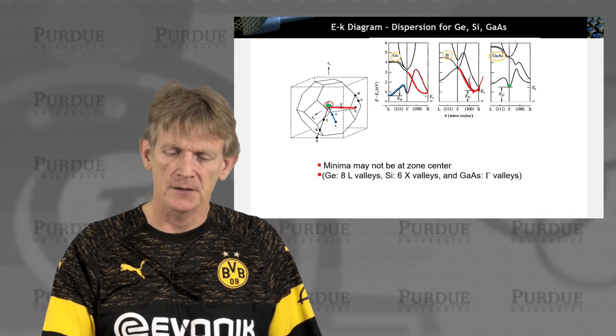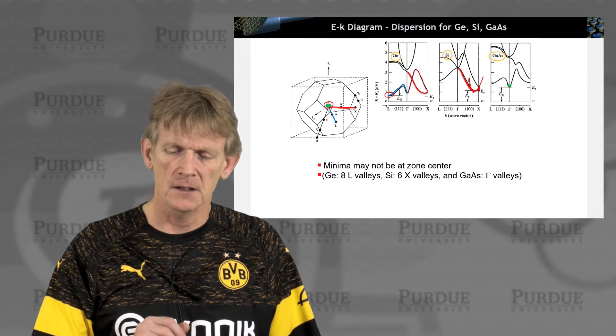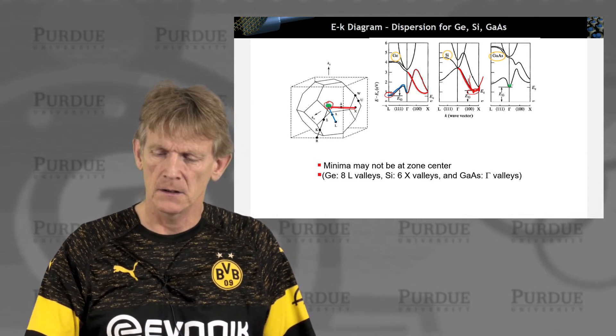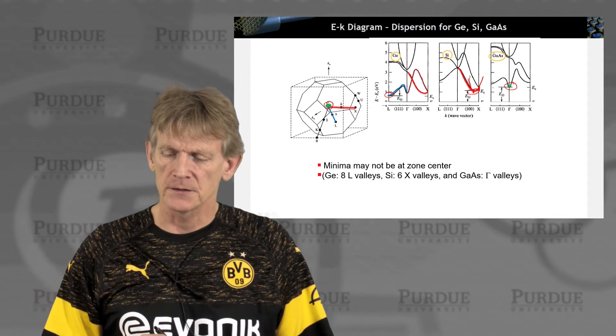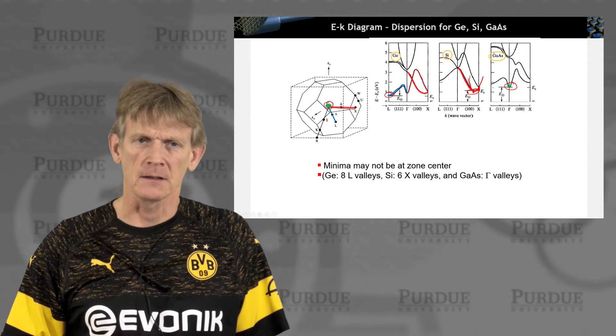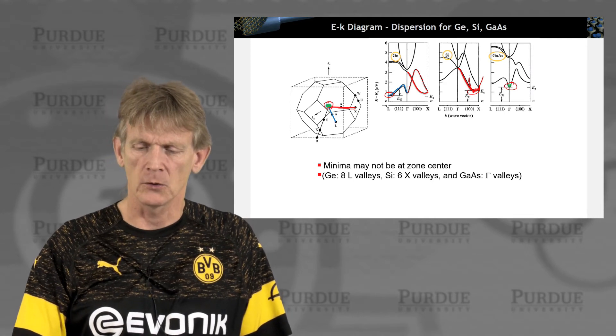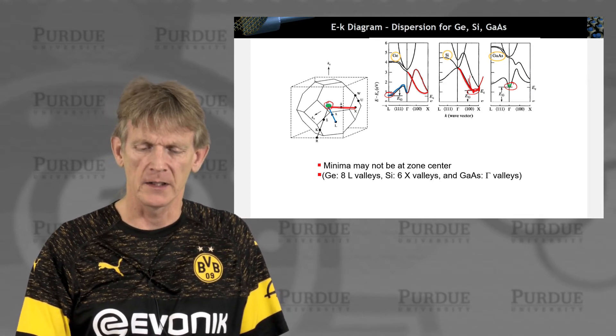So the message here is that the minima may not be at the zone center at the highest symmetry point. And germanium has eight of these kind of valleys here. And silicon has six. And gallium arsenide is symmetric. It has everything that's most relevant here at the gamma point.